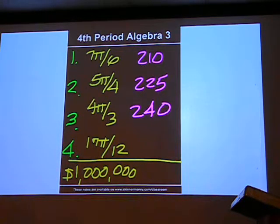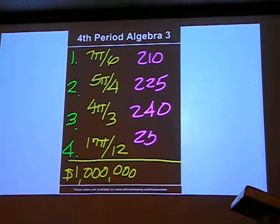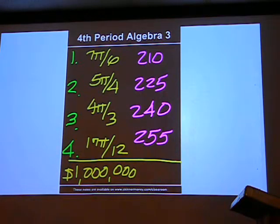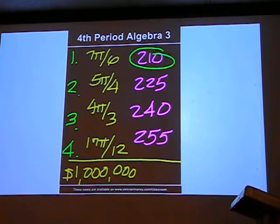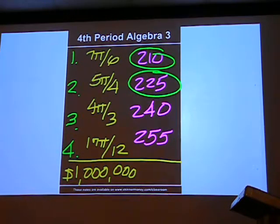Problem 4 is 255. If you go back and add these up, you'll come up with the following sum: 210 and 225 is 435.